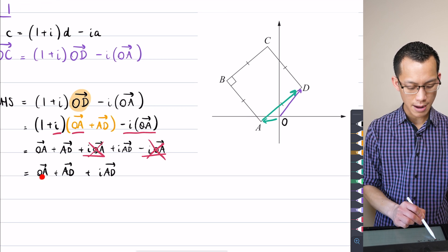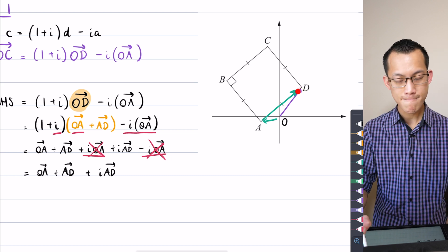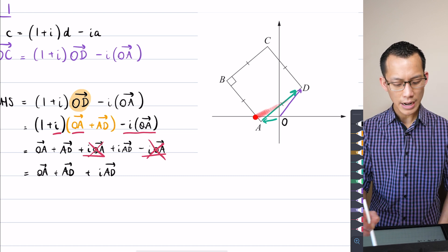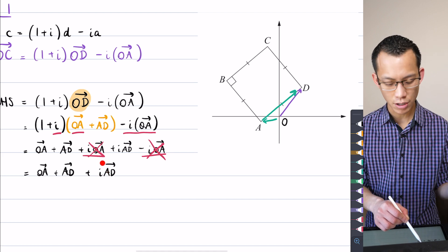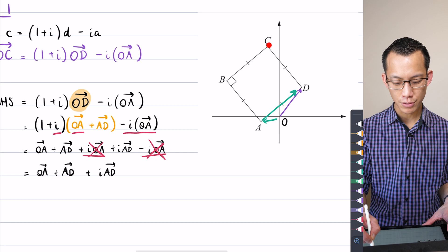So if you think about this, OA plus AD takes me to D, as I mentioned before, and what I should get at the end, if this whole result is correct, I should end up at C. So I should be able to go from here up to here.